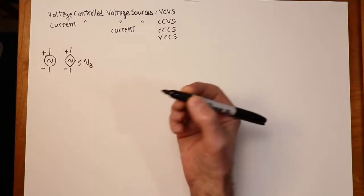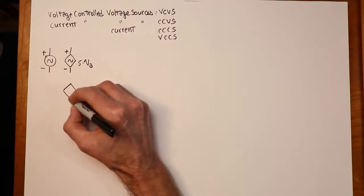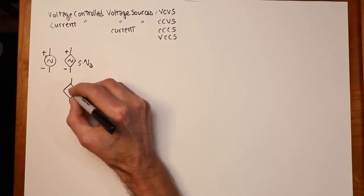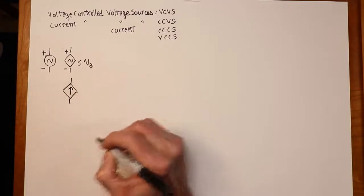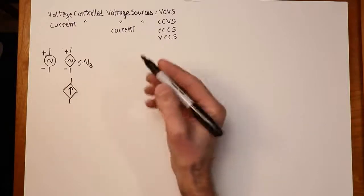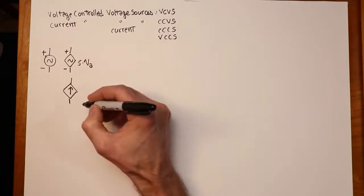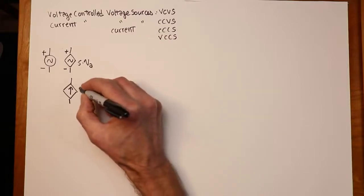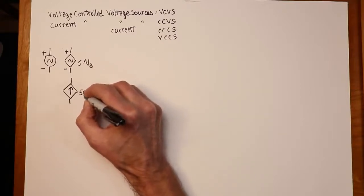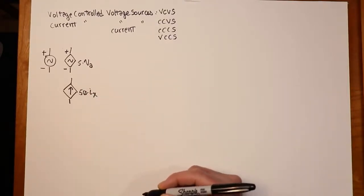If it was a current source, our current source symbol typically would look something like this. It may or may not have a little sine wave in it. Again, could be round. We might have something like a current controlled current source with a factor of 50. So we would say this current is 50 times some other current, IX, and off we go from there.